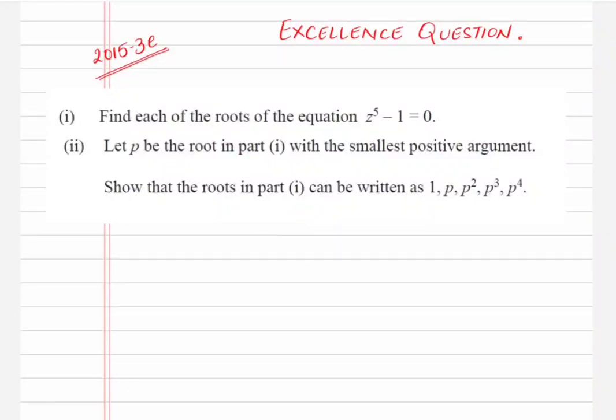Hi guys, let's do this. This excellence question is from complex numbers — exam question 2015 3e. Find each of the roots of the equation z⁵ minus 1 equals 0. That's the first part, and let p be the root. Let's do the first part first and then go to the second.